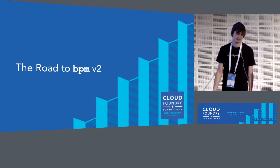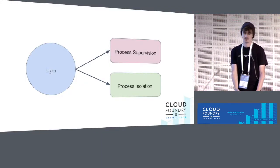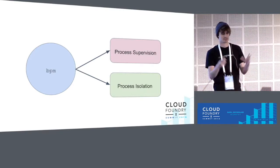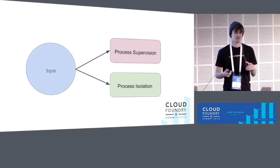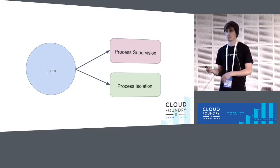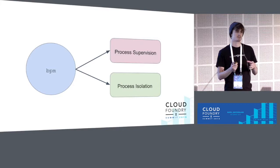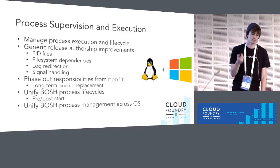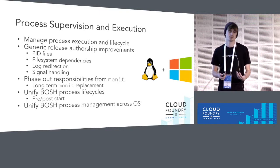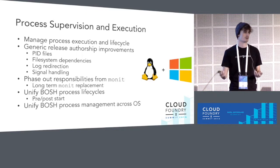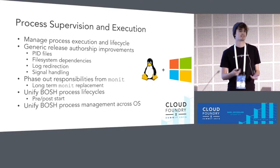Because we just talked about v1, the next thing is what does it mean for v2 — and this is where things get exciting. The current structure of BPM is basically an isolation and execution tool wrapped by Monit within the Bosch framework. Where we envision BPM moving is a two-part system: BPM as a process supervisor, and BPM as the process isolation layer. As a process supervisor, we imagine BPM managing process life cycles and execution — start, stop, et cetera — and still bringing generic release authorship improvements to releases that opt in.